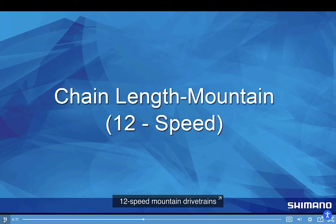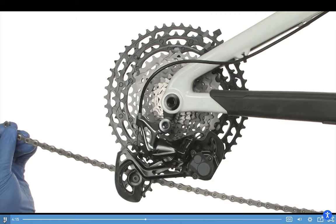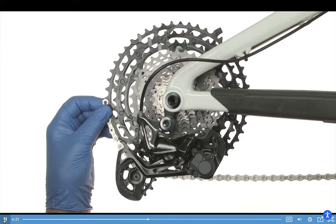12-speed mountain drivetrains are measured differently from 6 to 11-speed systems. Place the lower section of chain like this on the cassette, and then wrap the chain around the chainring.